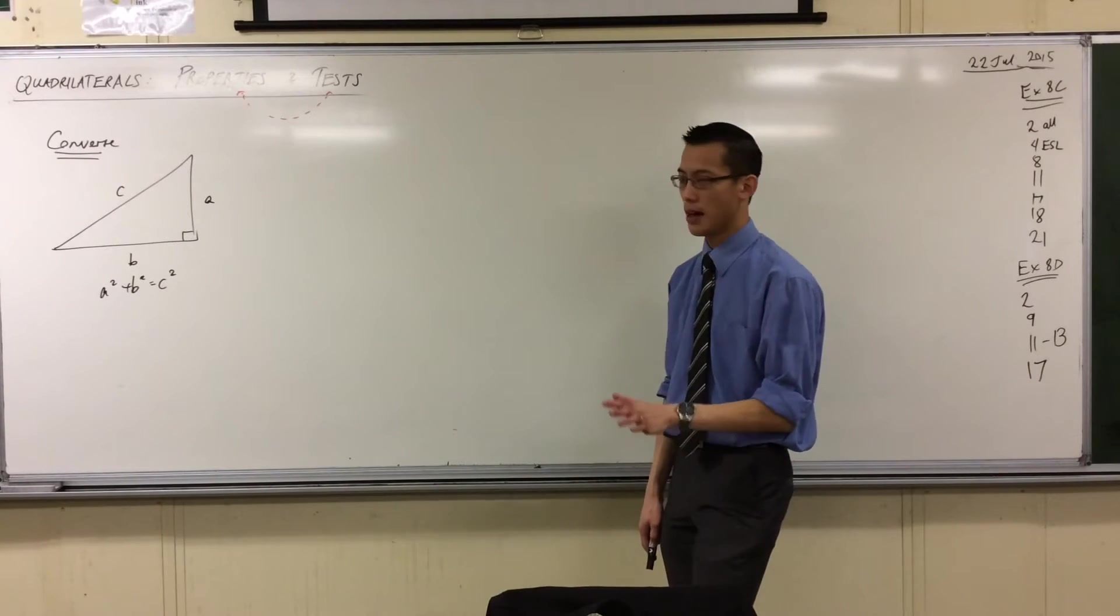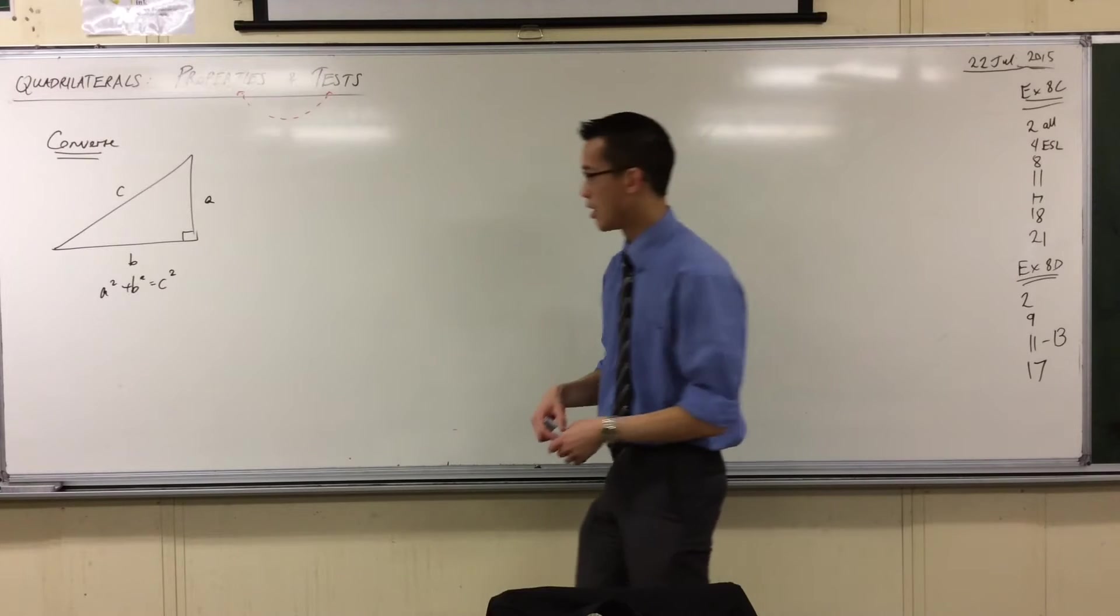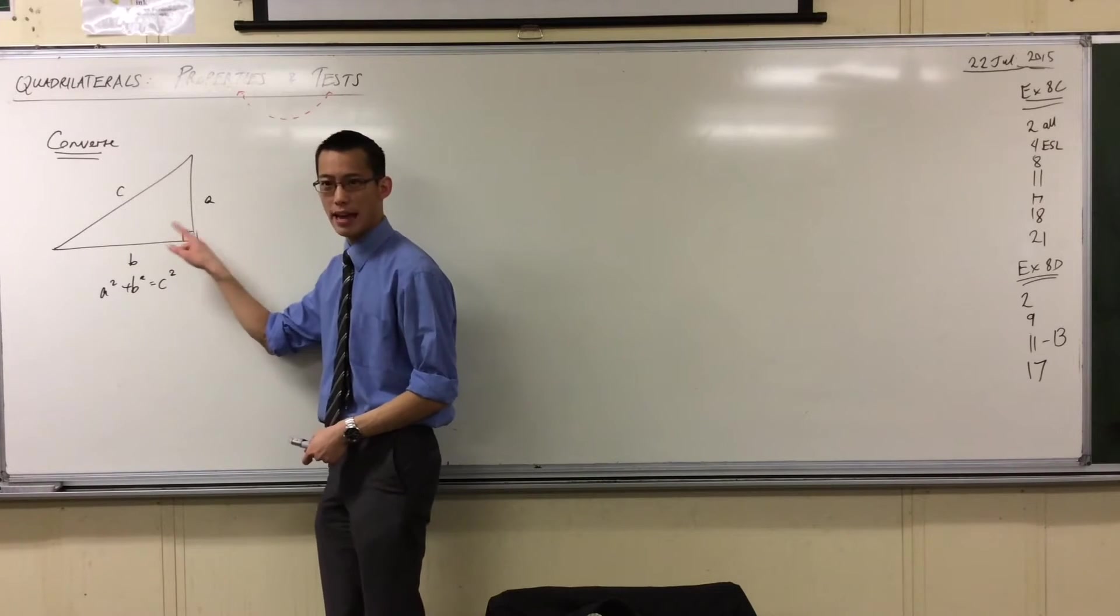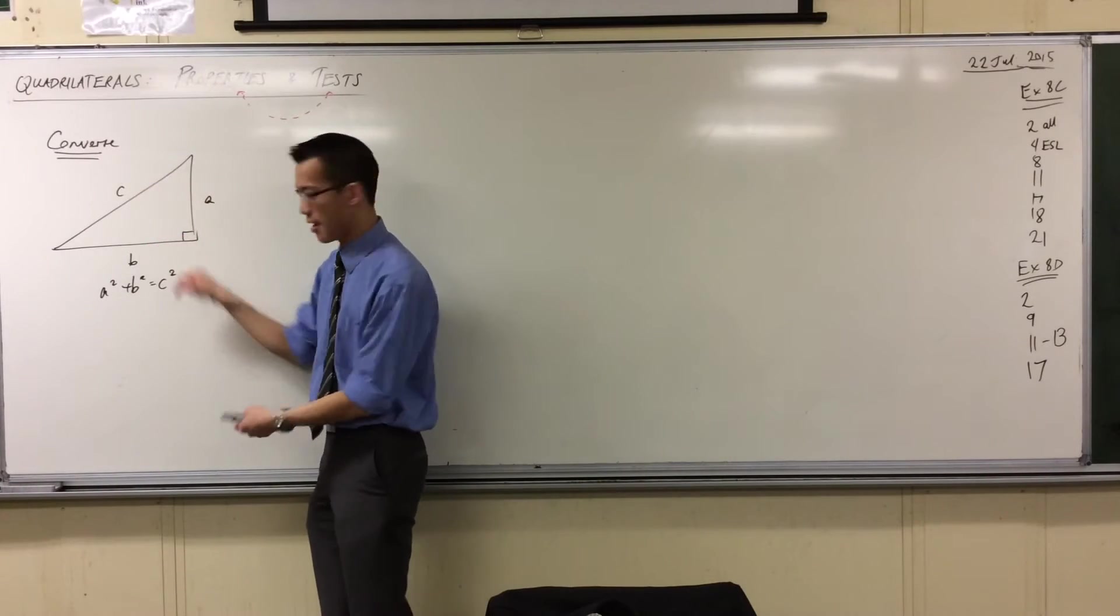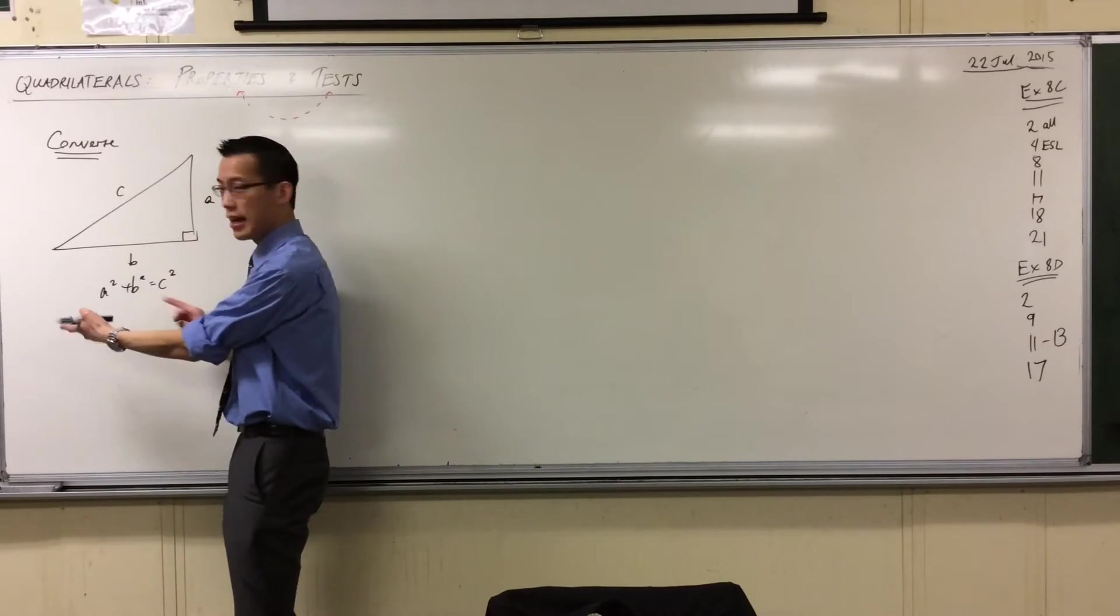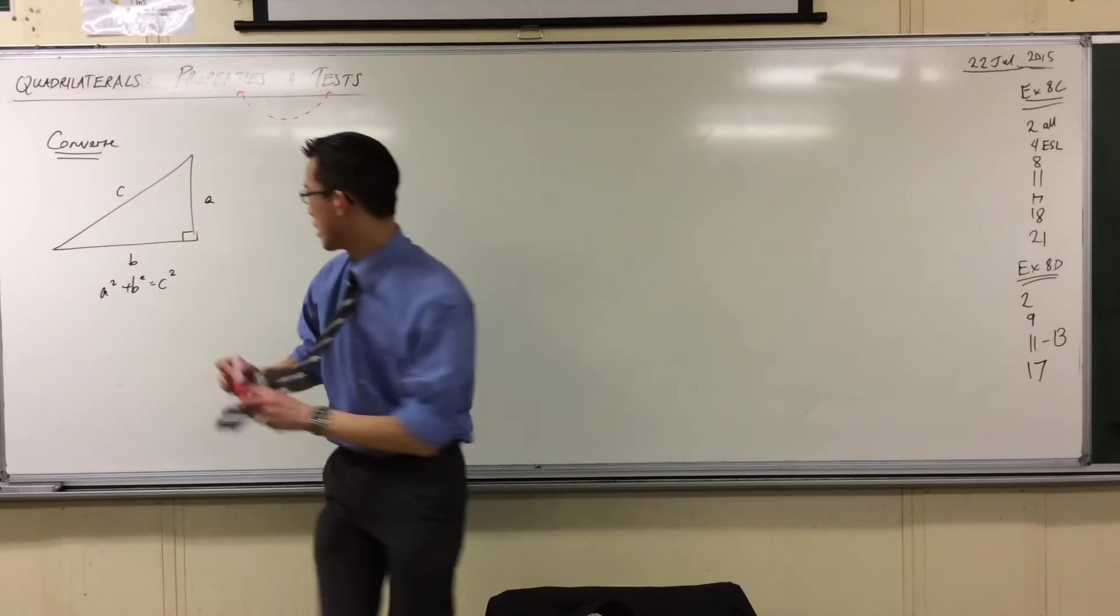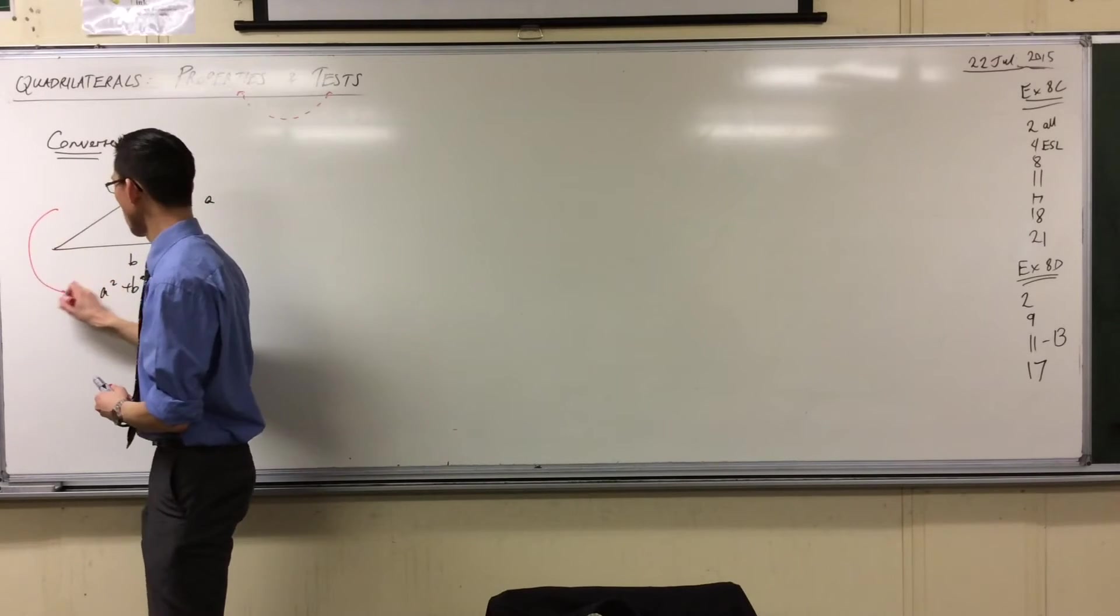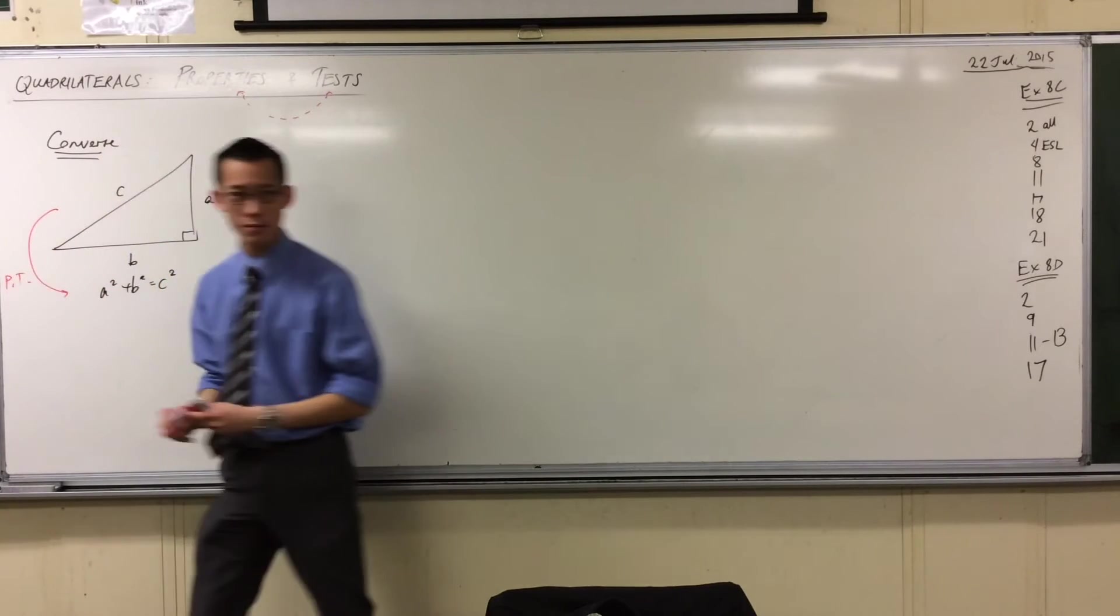Now the converse is to view this the other way around. Rather than to start with a right-angled triangle and some sides and then conclude this, it's to go, rather than this way, which is Pythagoras' theorem.